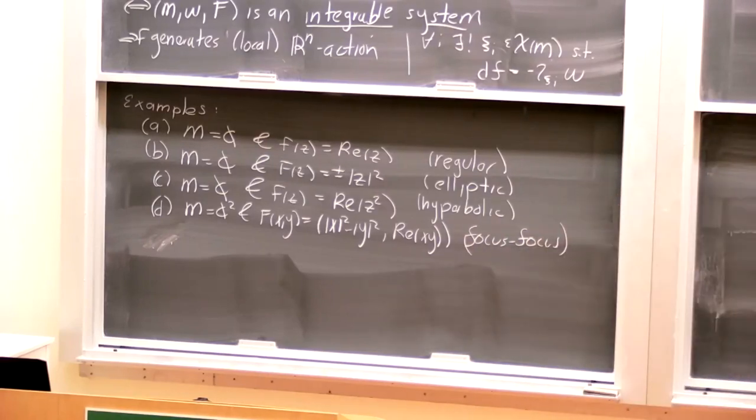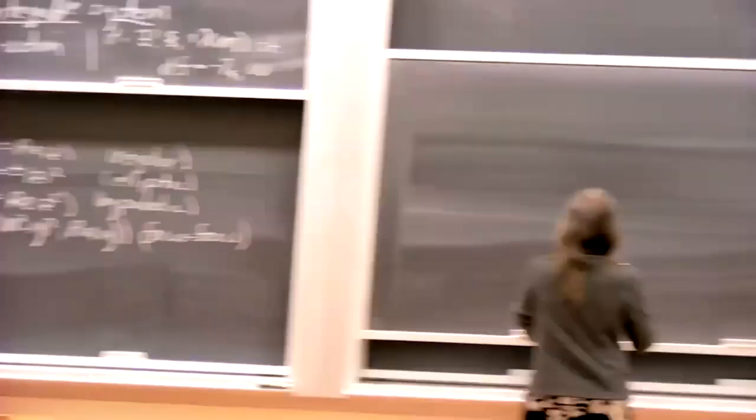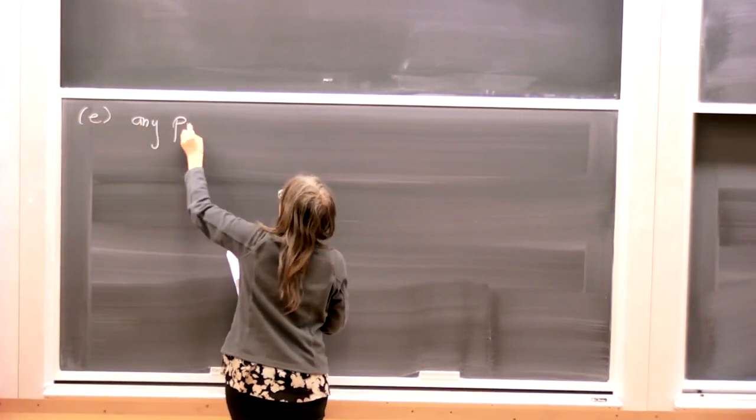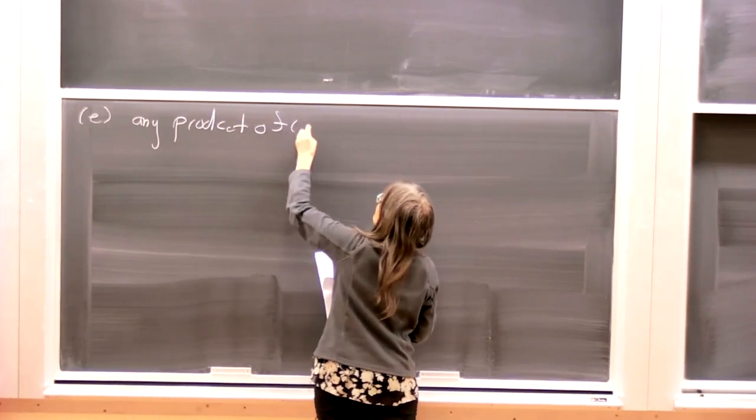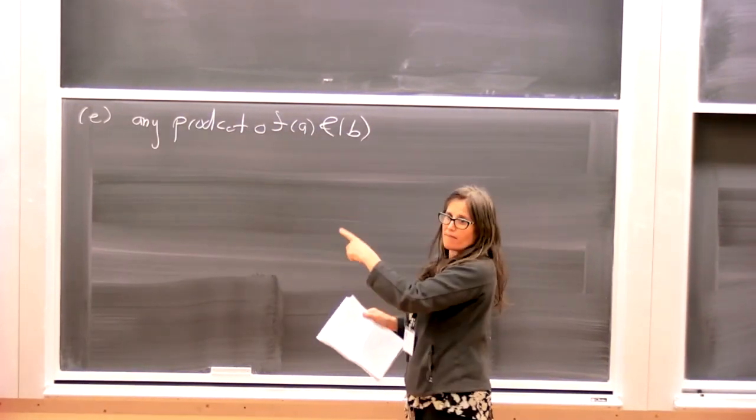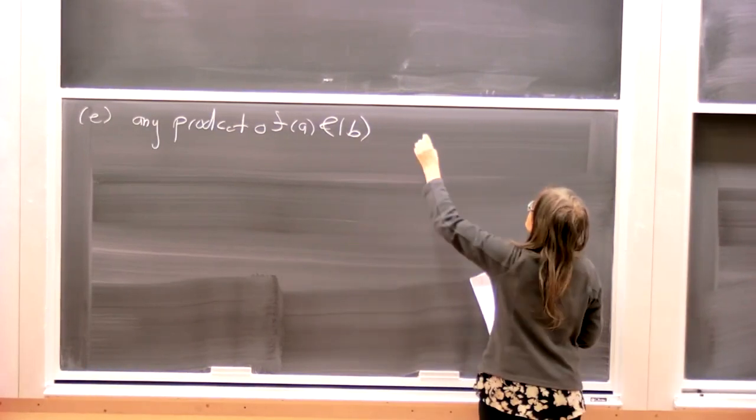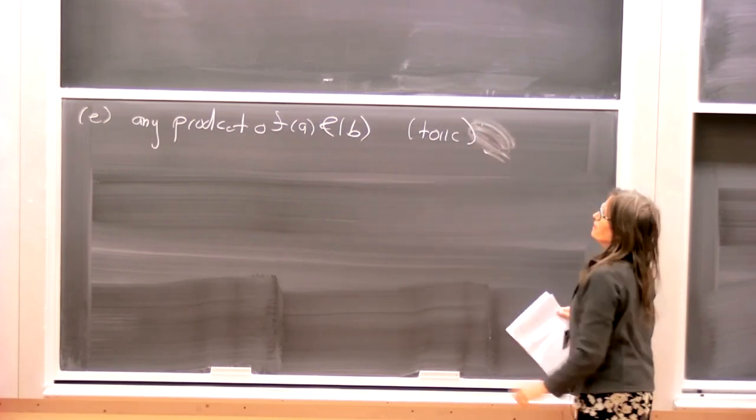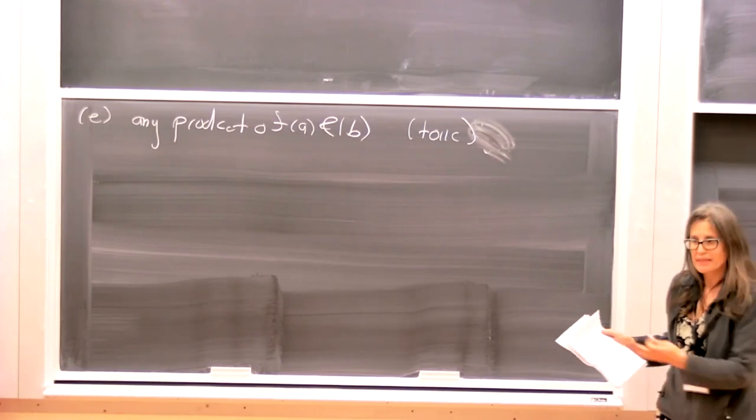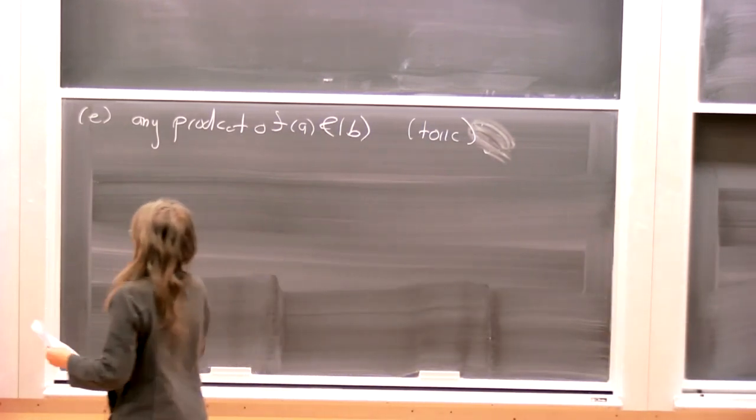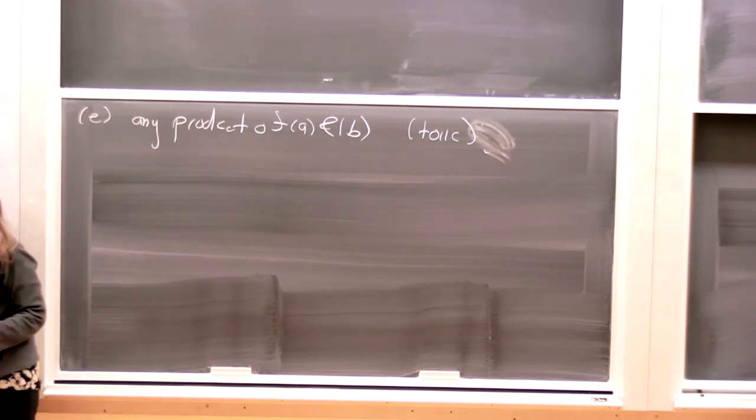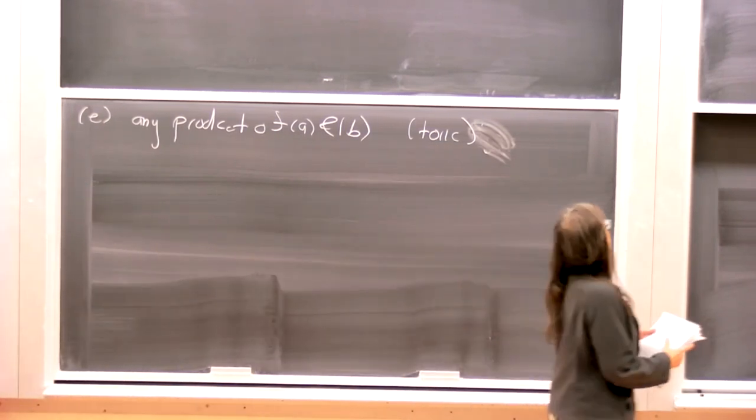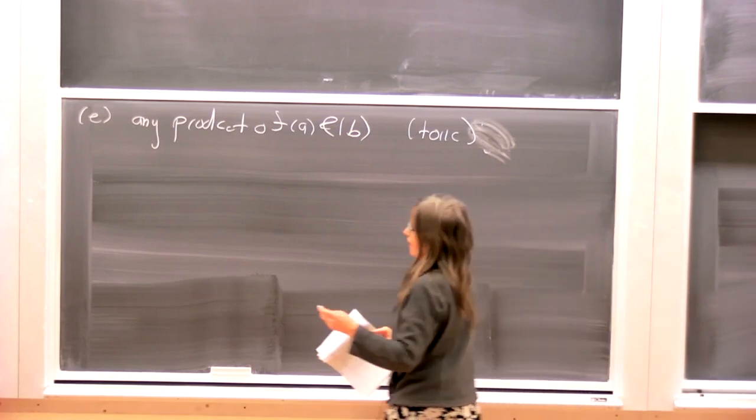And then we will need one more. We can take any product of a and b, and of course we can actually take any product of all of them, but I want to name this. And I want to say this is toric type. So I'll just call it toric. So anyway, that's some examples of integrable systems.